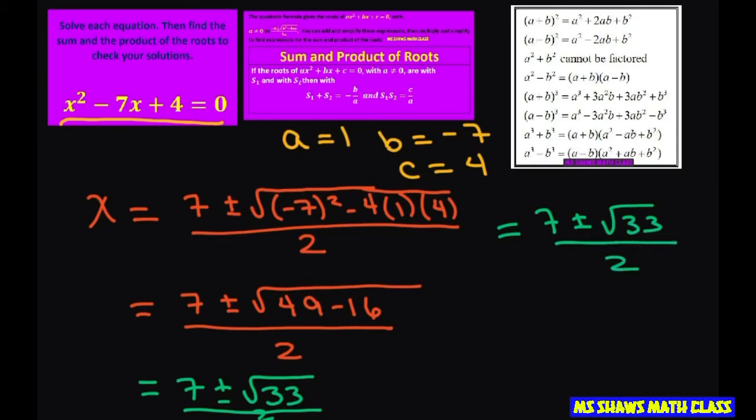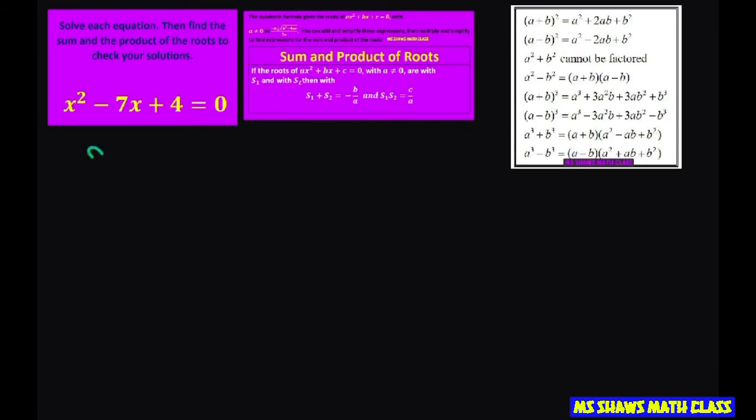are your two solutions. I'm going to write it on the next slide. Solution 1 is x = (7 + √33) / 2, and solution 2 is x = (7 - √33) / 2.